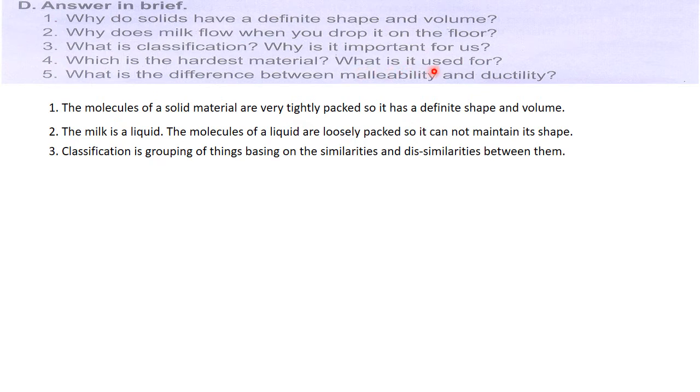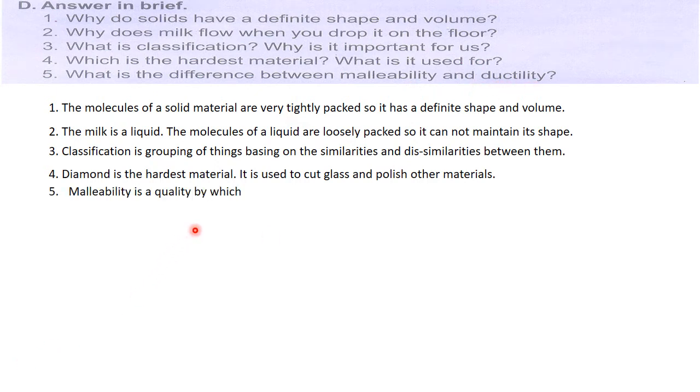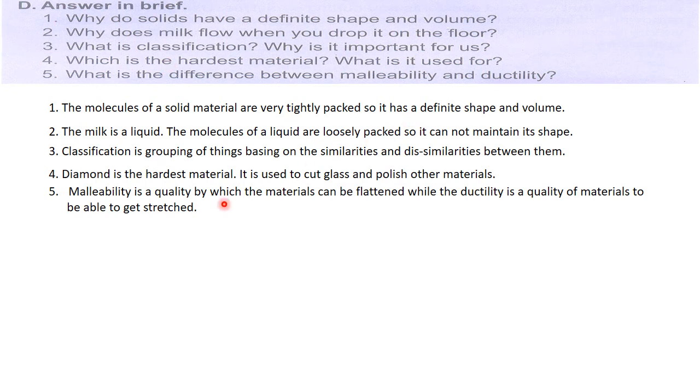Which is the hardest material? What is it used for? Diamond is the hardest material. It is used to cut glass and polish other materials. What is the difference between malleability and ductility? Malleability is a quality by which materials can be flattened, while ductility is a quality of materials to be able to get stretched. Through the ductility quality we can stretch them and make them into wires, while because of malleability we can flatten them by compressing or pressing them.